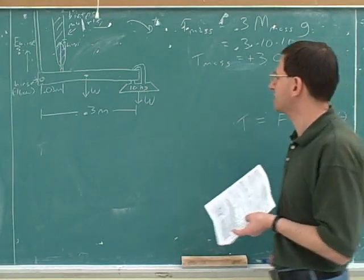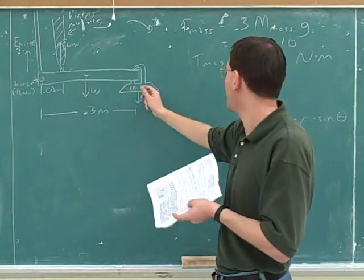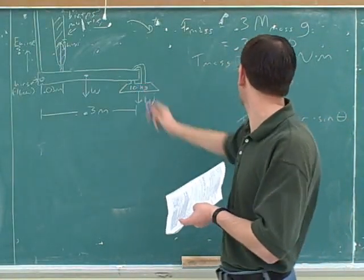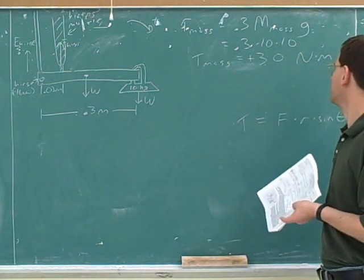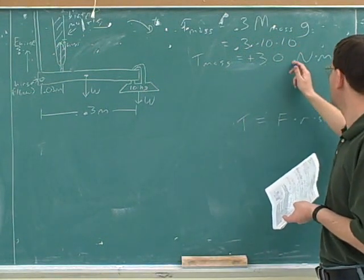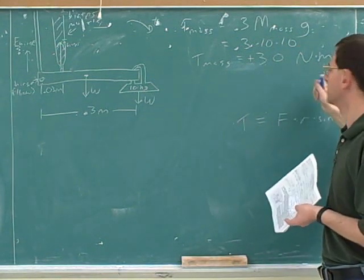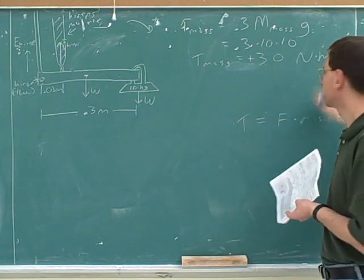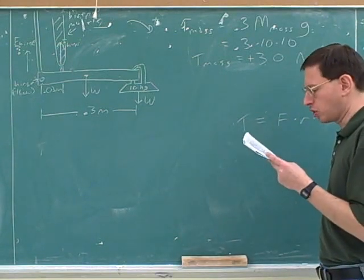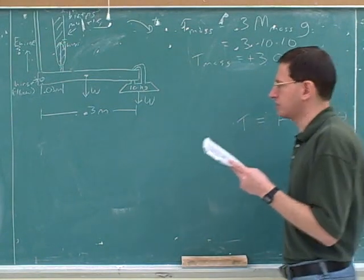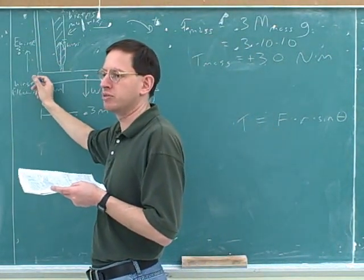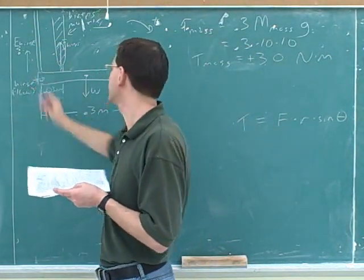What this tells us is that this mass is creating a torque that would be the same as the torque of a 30 Newton force that was one meter from the pivot. They told you to choose the hinge as the pivot point. Of course, you can choose whatever you want here because it's not moving again at the start.